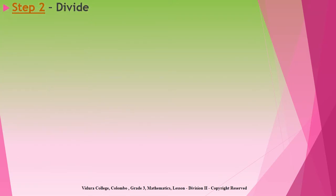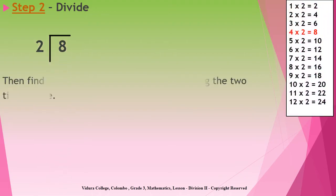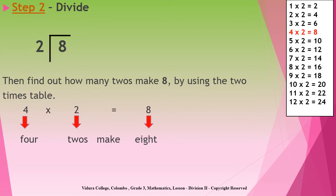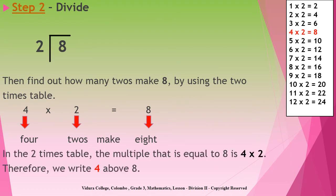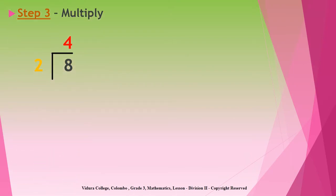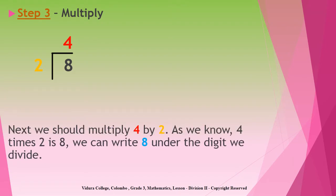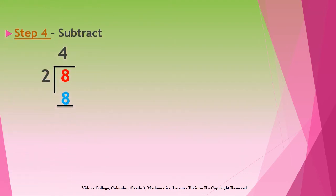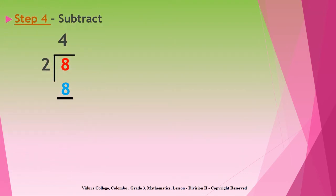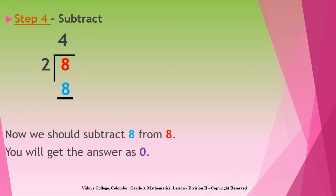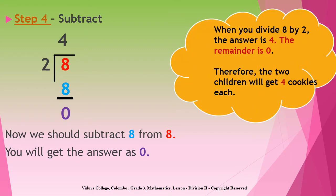Step two is doing the division by using the two times table. First, you should find out how many twos make eight by using the two times table. You will see that four twos make eight. Therefore, we write four above eight. Step three is to multiply four by two. As you know, four times two is eight. Therefore, we write eight under the digit that we divide. The final step is to subtract the lower digit from the upper digit. So here when you subtract eight from eight, you will get zero as the answer. Therefore, when you divide eight by two using the long division, the answer is four with no remainder.